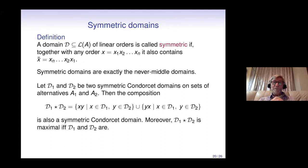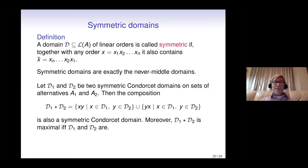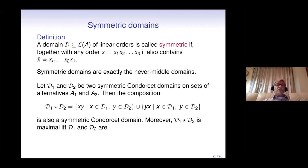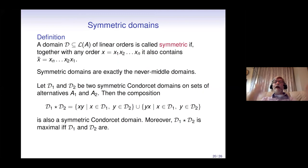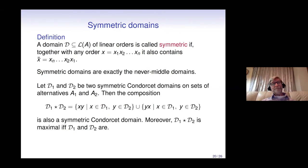Now let's move to symmetric domains, which are never-middle domains. A domain is symmetric if whenever it contains an order x1, x2, ..., xn, it also contains the completely reversed order xn, ..., x2, x1. Peak-peak domains have only one pair of completely reversed orders, but in symmetric domains every order has its reversed counterpart. Symmetric domains are exactly the never-middle domains, and they admit a very nice composition operation.